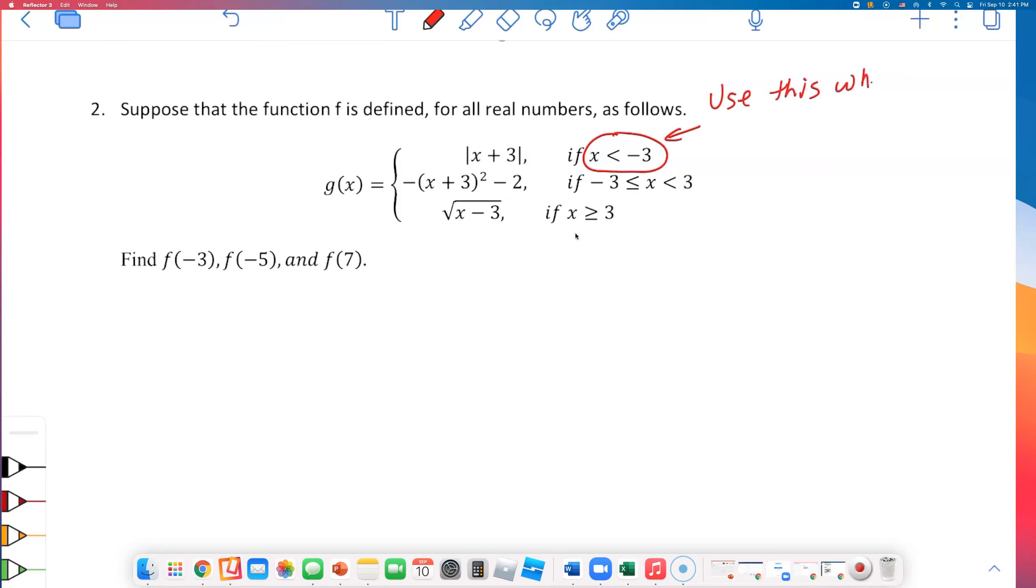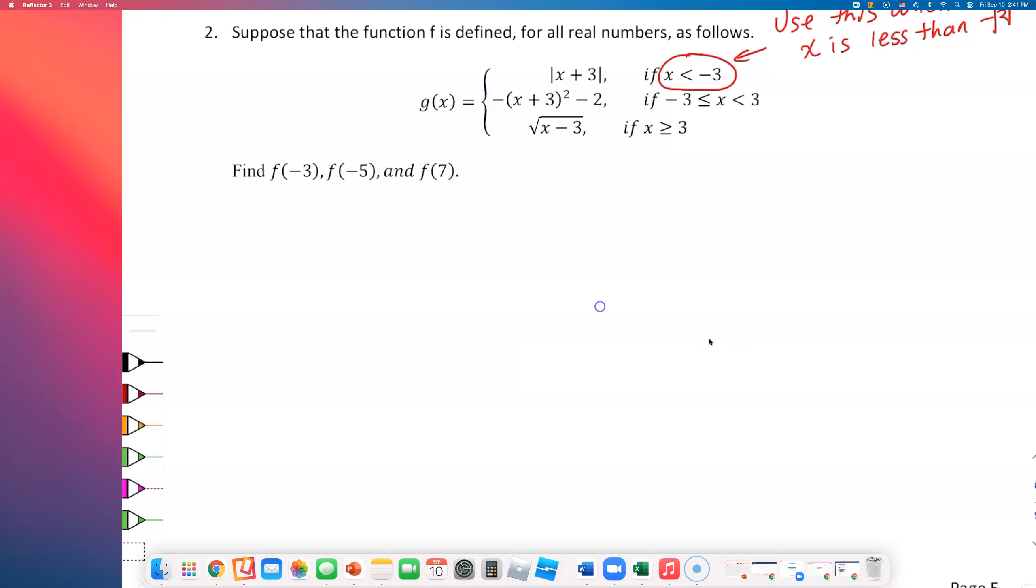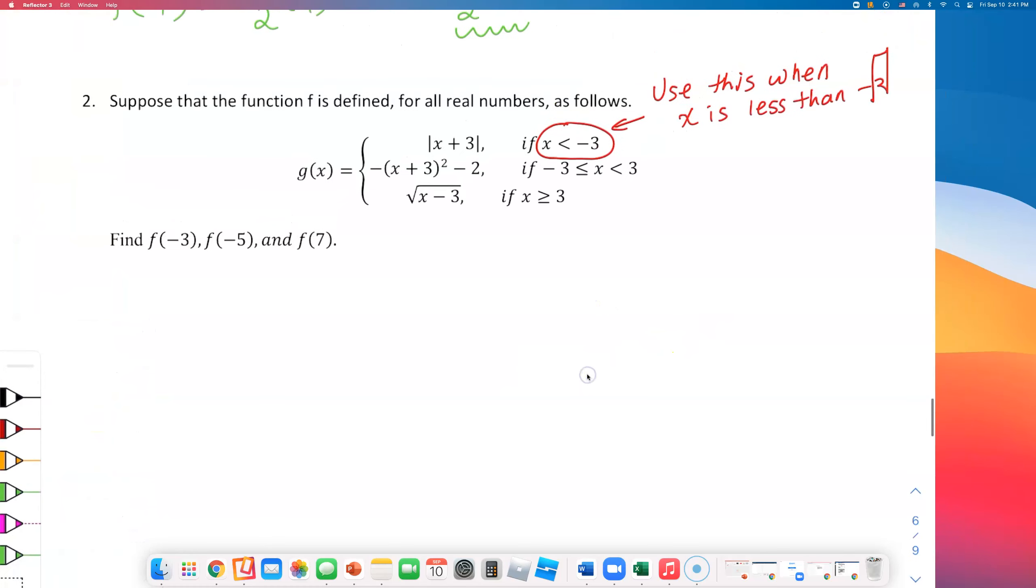This one's a little bit more complicated. So when do you use that top piece? Use this when x is less than negative 3. Whoops, where did that go? Sorry about that, I'm back. It just crashed on me. So when x is less than negative 3, you use that absolute value function. This one right here. But what if, I'm reading the second one now.